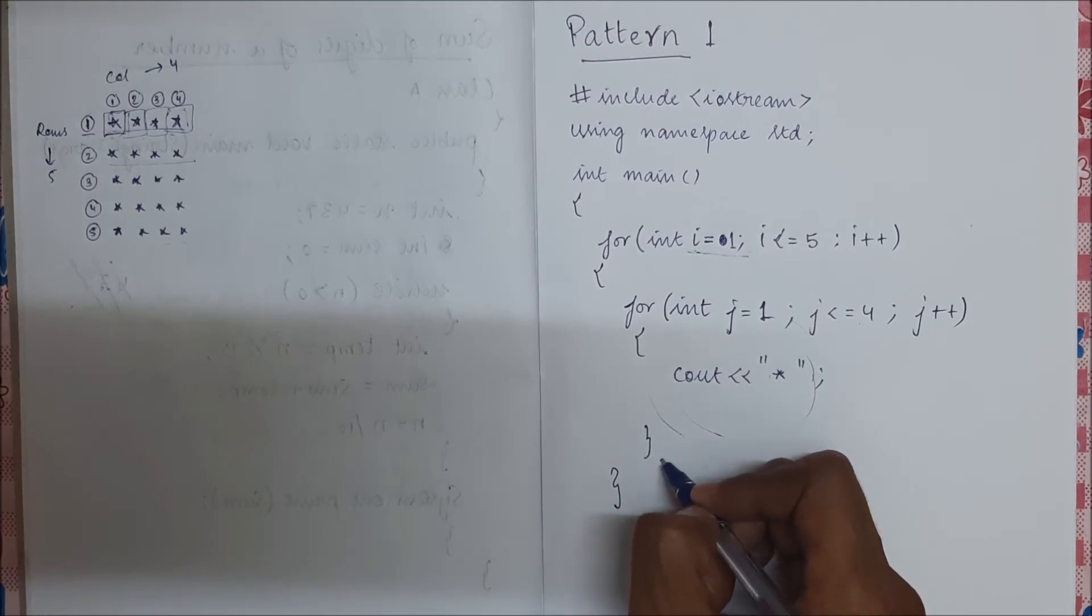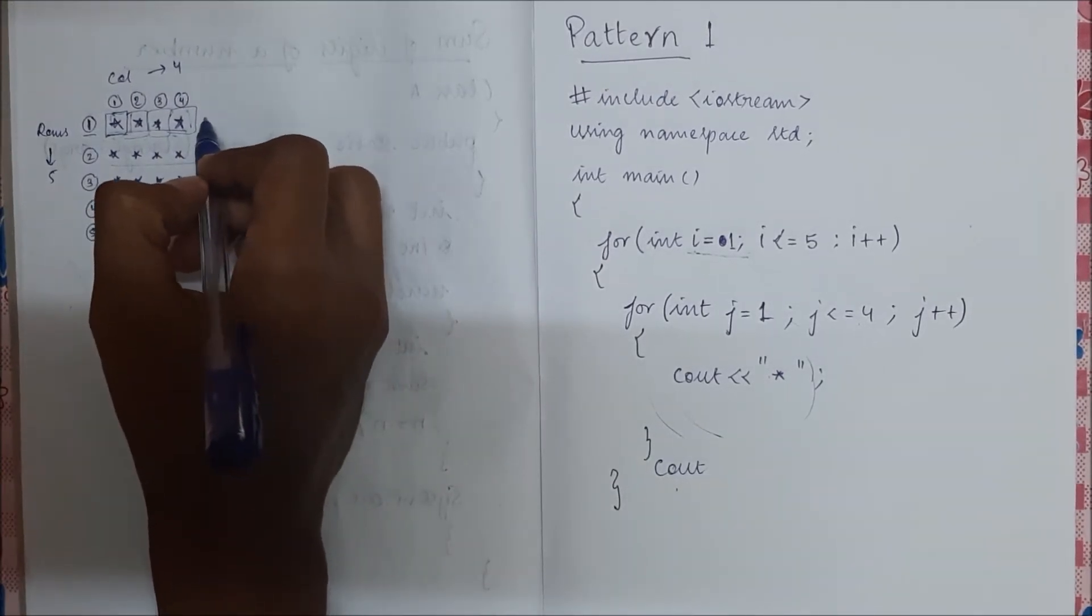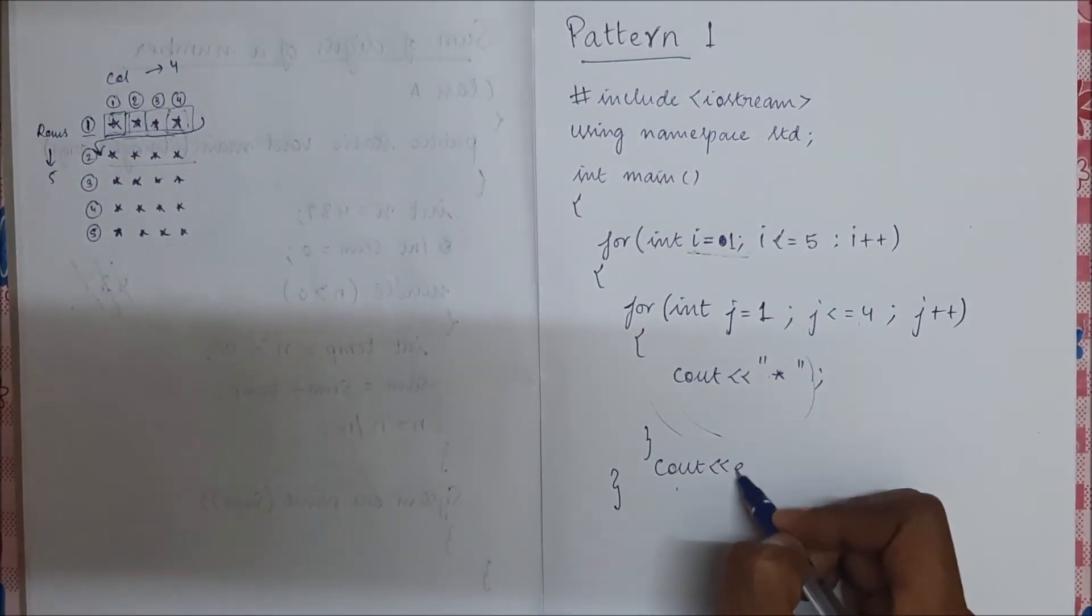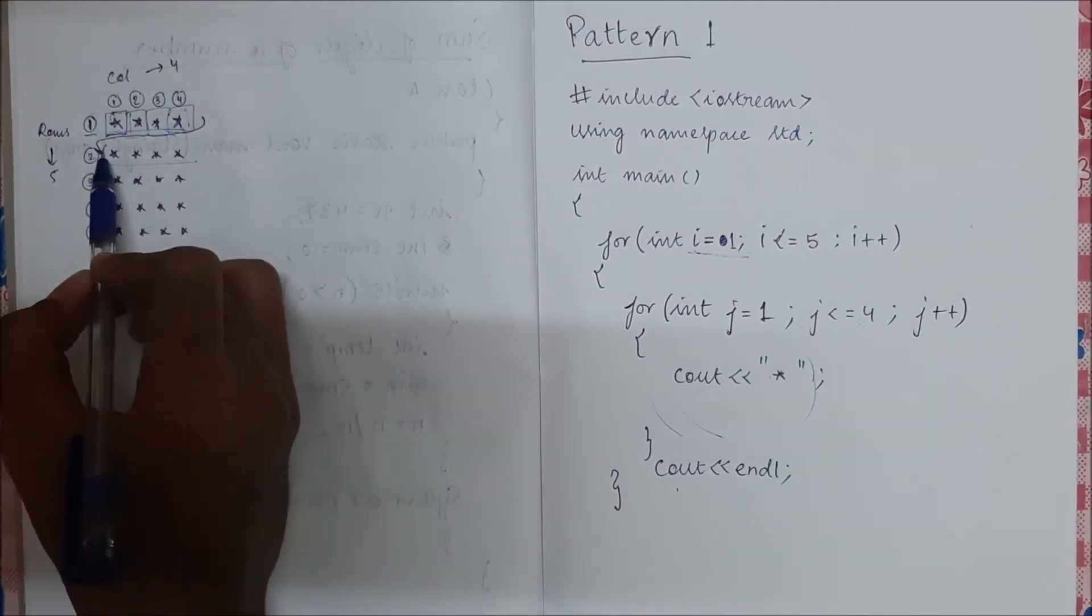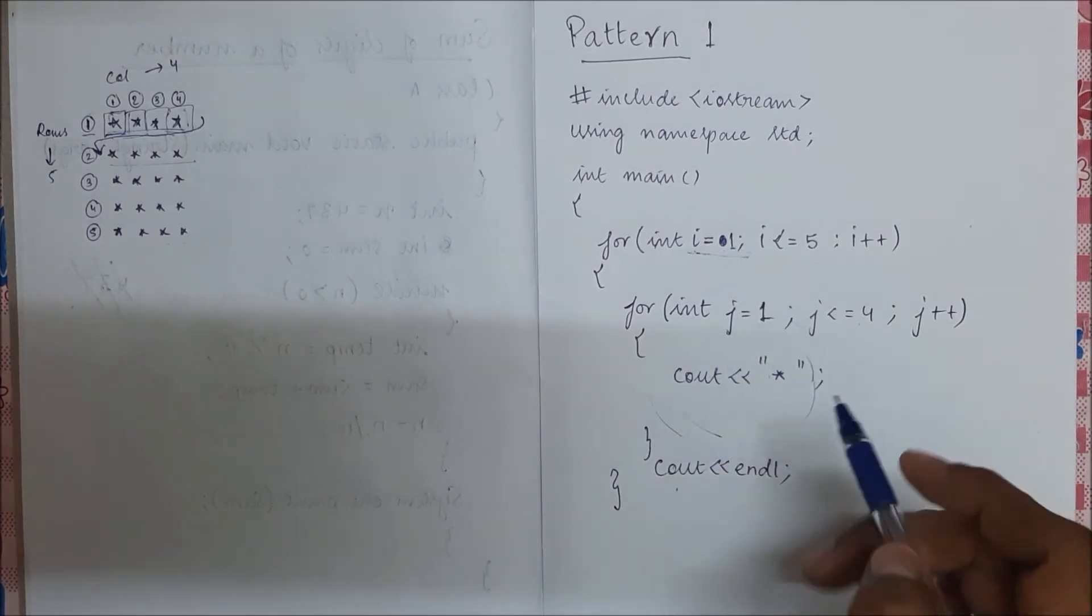This will be printed, then j will be incremented and j will be four, then after four it will come out. So we have to change the line from here to here. So I will do backslash n. This will change line. So we are here now, that is i will become two and this will continue.